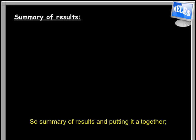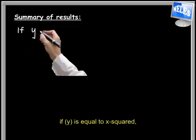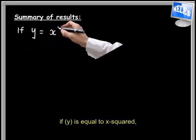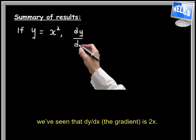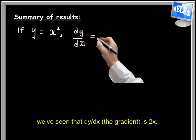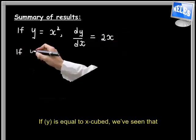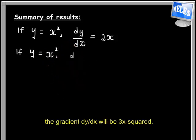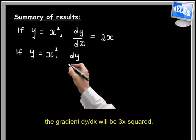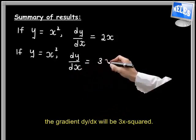Summary of results and putting it all together. If y is equal to x squared, we've seen that dy/dx gradient is 2x. If y is equal to x cubed, we've seen that the gradient dy/dx will be 3x squared.